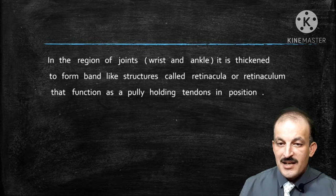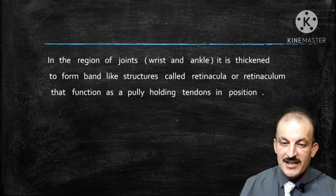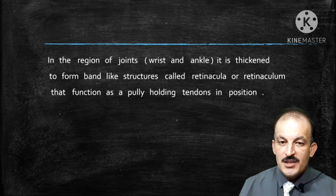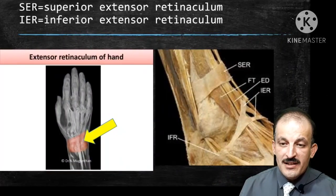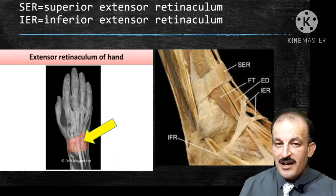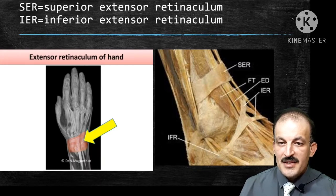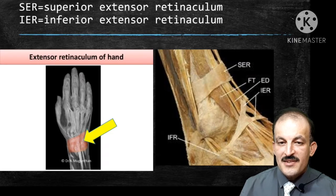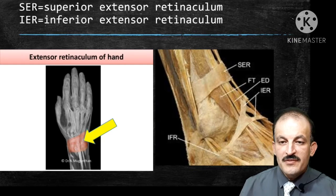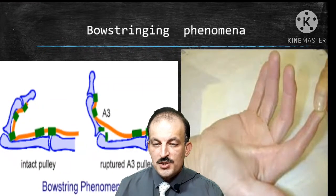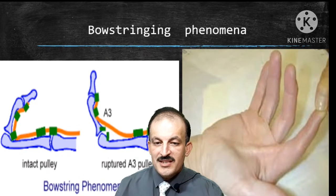In the region of joints such as the wrist and ankle, the deep fascia is thickened to form band-like structures called retinacula, or retinaculum, which function as a pulley holding tendons in position. These two figures represent the retinaculum: SER represents the superior extensor retinaculum at the ankle region, and the yellow pointer represents the extensor retinaculum of the hand. These are very important to prevent the bowstringing phenomenon of the tendon during muscle contraction.